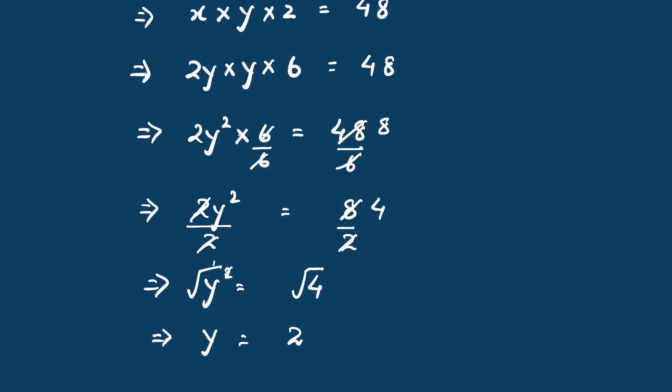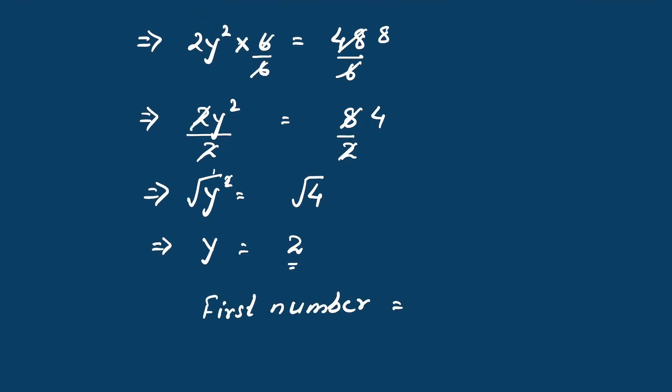The first number will be twice the second number, that is 2 times 2. The answer is 4. What is your answer? If 4, well done! Like and subscribe. Thanks for watching.